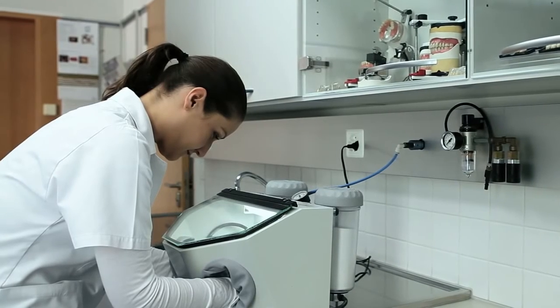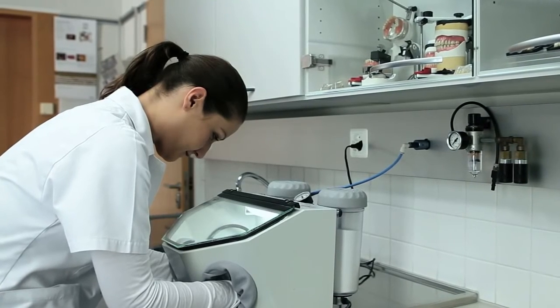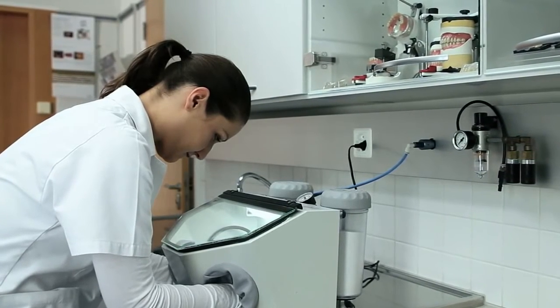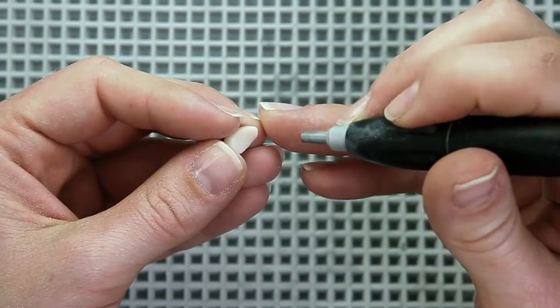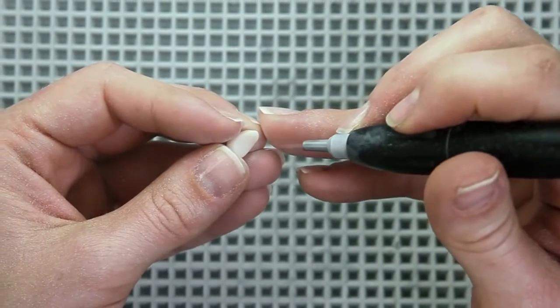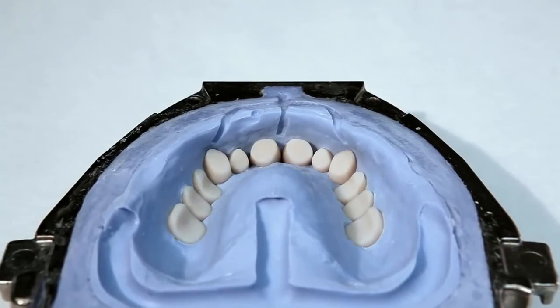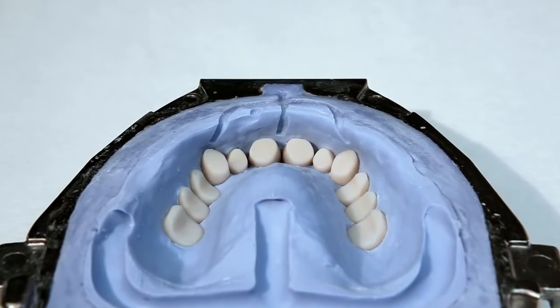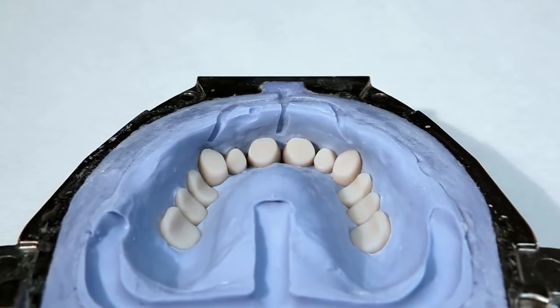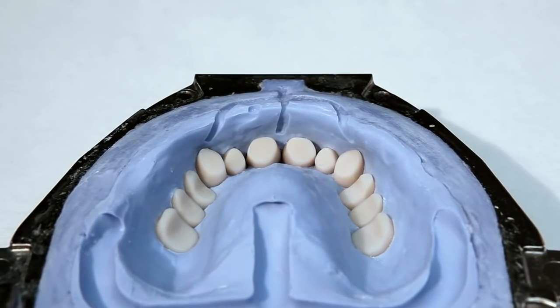After cleaning, roughen the basal surfaces by slightly sandblasting them. As an alternative, you can roughen the surfaces with a cross-cut burr. For further information on the processing of resin teeth, please refer to the instructions of the corresponding tooth manufacturer.